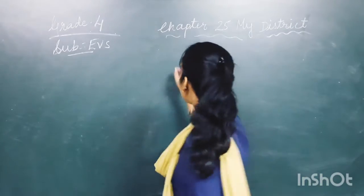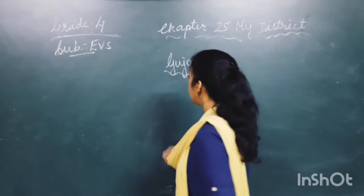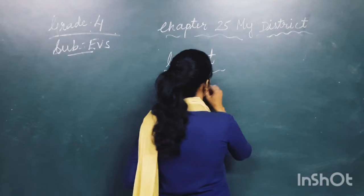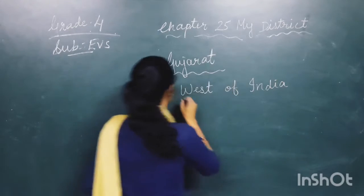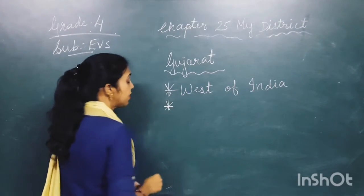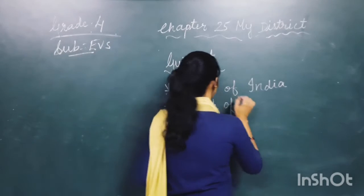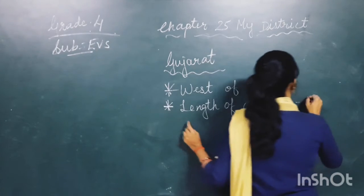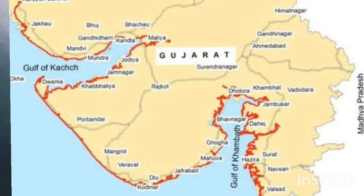Do you know in which state we are living? Yes, correct. We are living in Gujarat, which is situated in the west of India. What is the length of its coastline? Its coastline length is 1600 km, which is the longest coastline all over India.